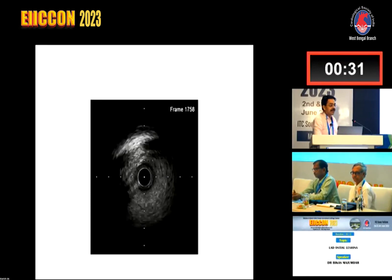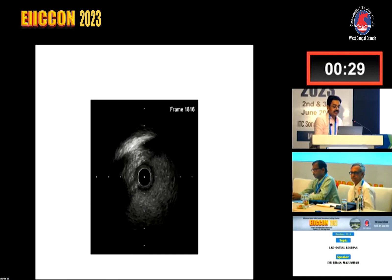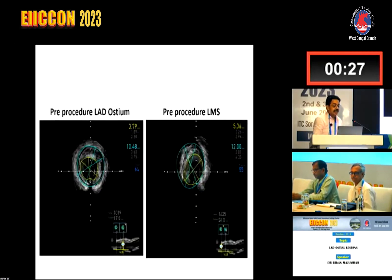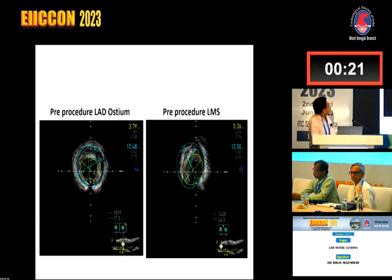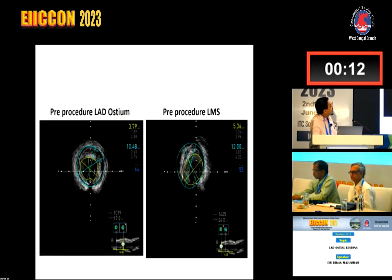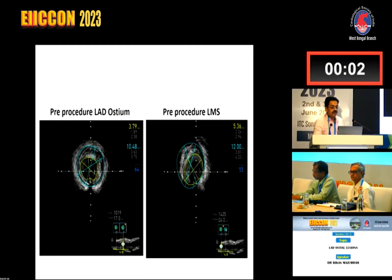So in this particular patient, there is osteo-proximal LAD disease as well as left main disease. When I measured the ostium of the LAD, the MLA came to 3.79 mm² — which is significant, being less than 4 — so I decided to stent it. There was also 55% plaque burden in the left main, so I decided to cross over and stent from the proximal LAD to the left main.